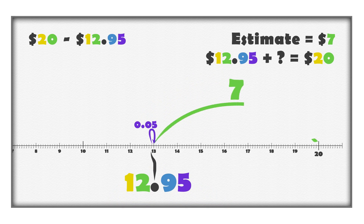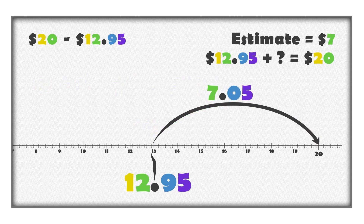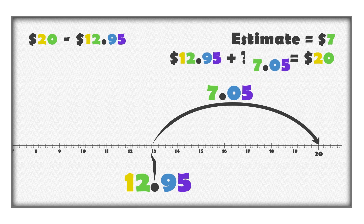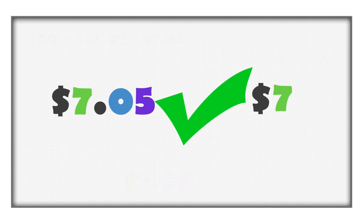Add 7 dollars to make 20 dollars. We added 5 cents and then 7 dollars. 20 dollars is 7 dollars and 5 cents more than 12 dollars and 95 cents. Or, the difference between 20 dollars and 12 dollars and 95 cents is 7 dollars and 5 cents. How close is the difference to the estimate?